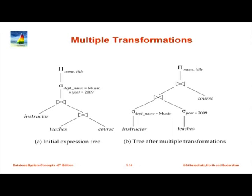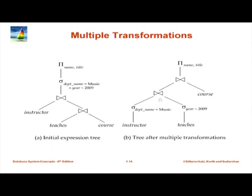What you might do is take an expression and apply multiple rules to get a new expression. This one shows the result after pushing the selection on department equal to music into instructor, and year equal to 2009 into teachers. Furthermore, the join order is different — here teachers join course is first, on the other side instructor join teachers is first. So we have also done join associativity. This is a more efficient plan because we are only looking at music instructors with courses in 2009. But the big question is in what order do we do this and how many alternatives do we generate? If we naively apply these transformation rules, there is a huge number of possible expressions — even with ten relations, you are looking at tens of millions of alternatives.